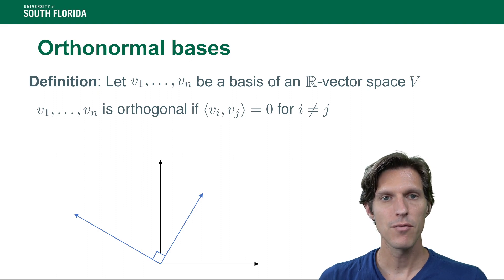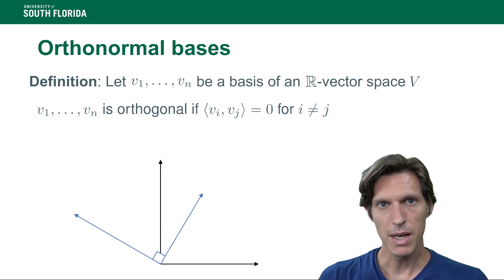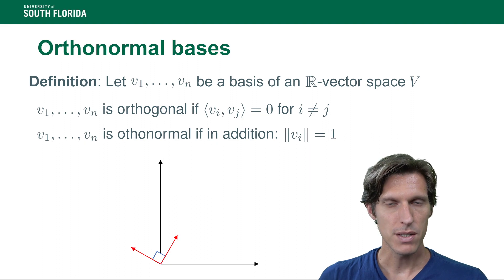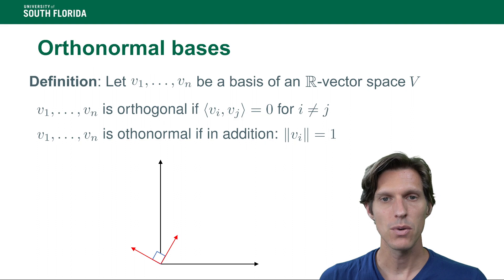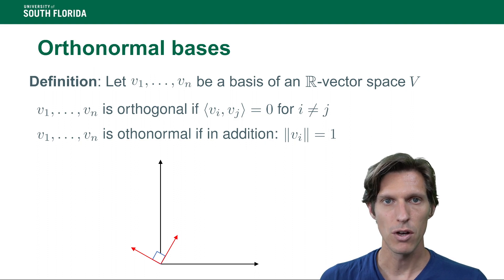Now if the vectors of a basis are orthogonal, which means their inner product is zero, then we have an orthogonal basis. An orthonormal basis is an orthogonal basis where all the vectors have length one. That's really what we're going to focus on in this lecture: ways to calculate an orthonormal basis.